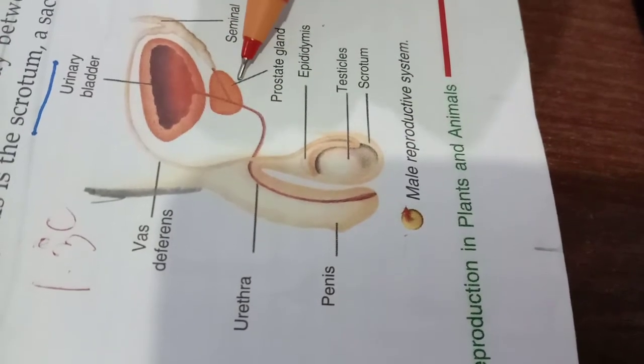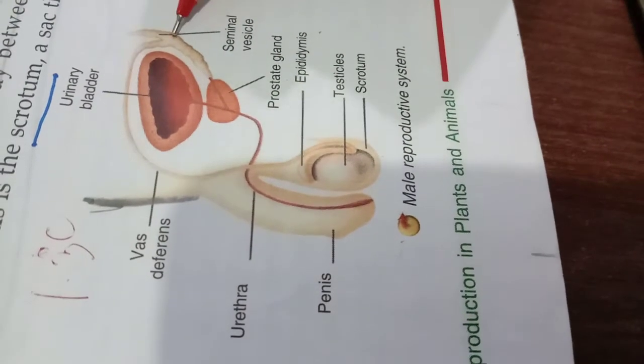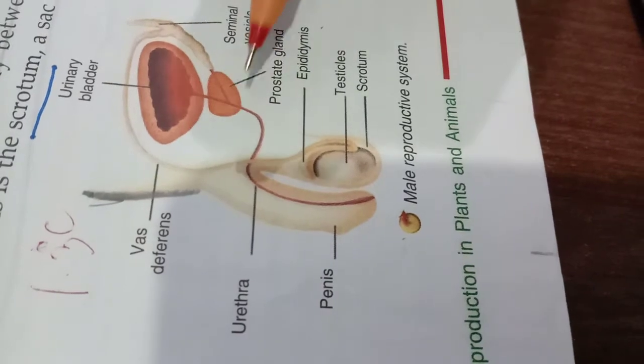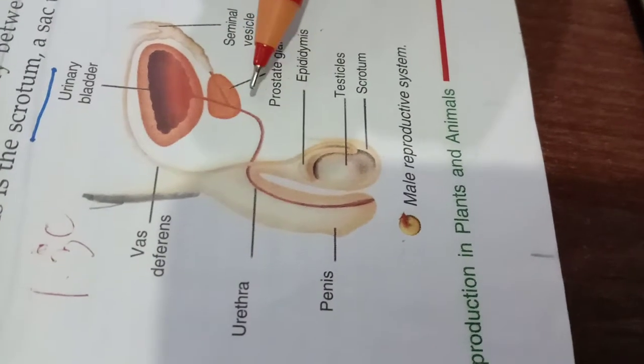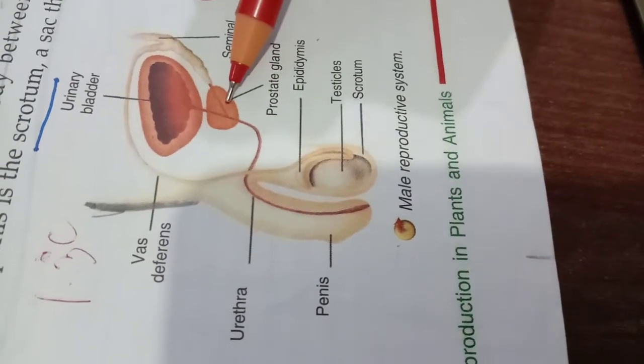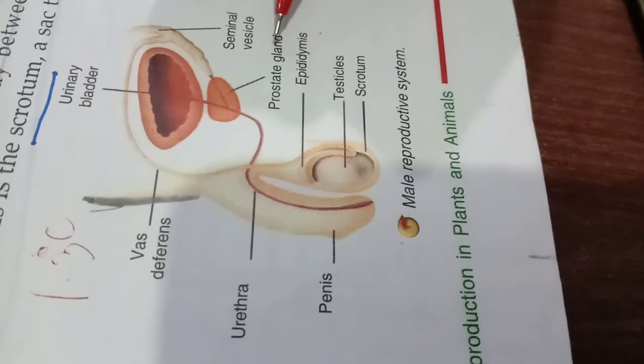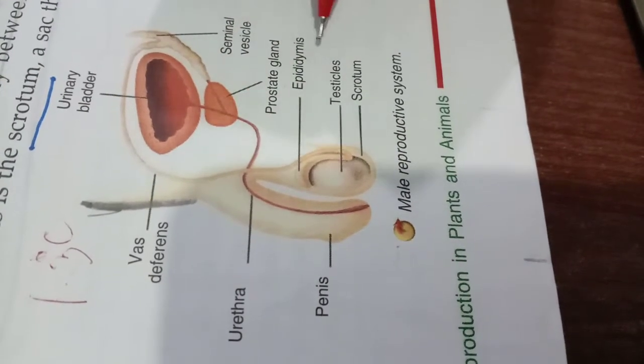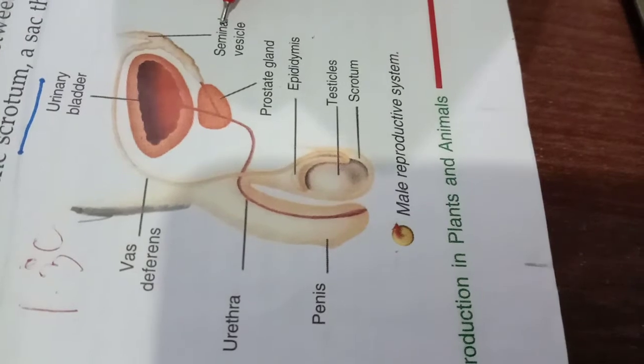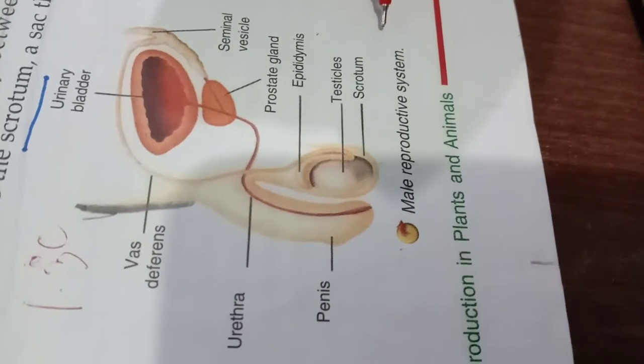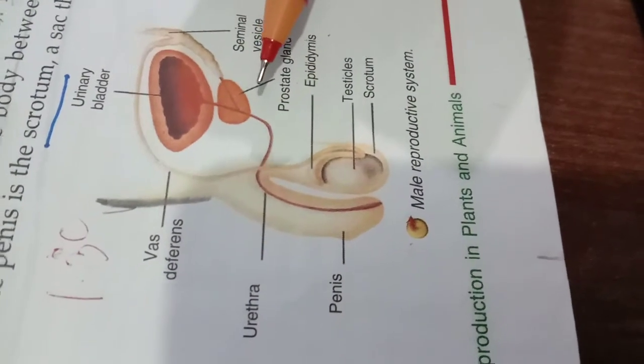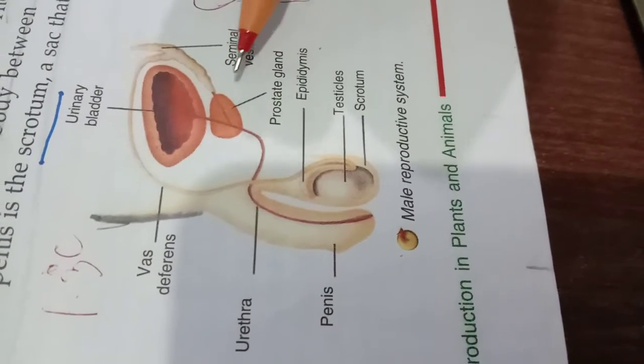And then you can find other organs are present called as prostate gland. Then you have got the seminal vesicle. One more gland is there, it is not shown, that is Cowper's gland. All these secrete secretion. Prostate gland will secrete one secretion. Seminal vesicle will secrete a secretion, that is a fluid and Cowper's glands also will secrete a fluid.